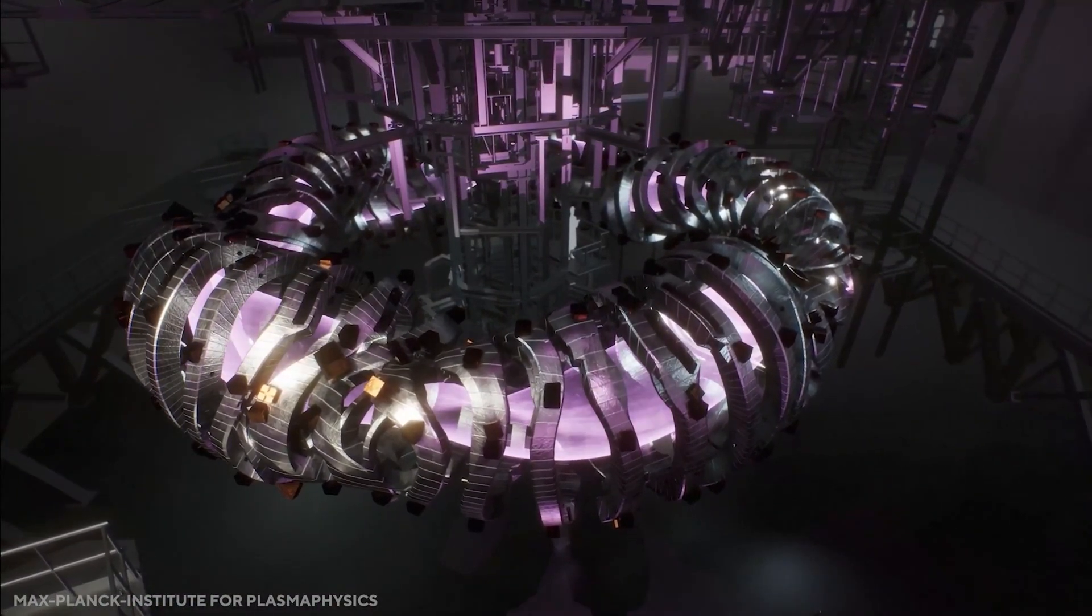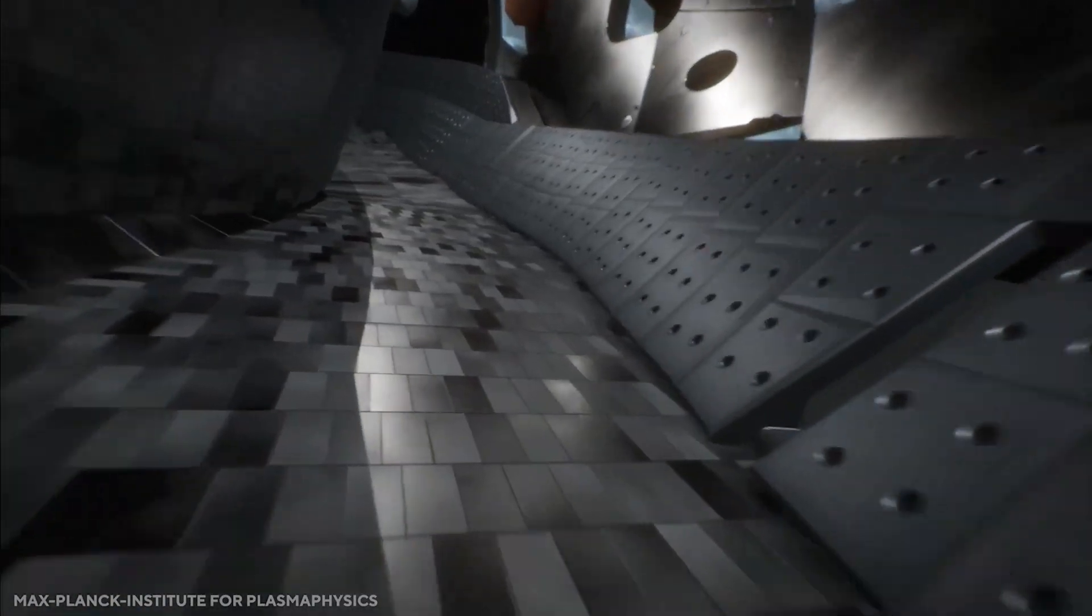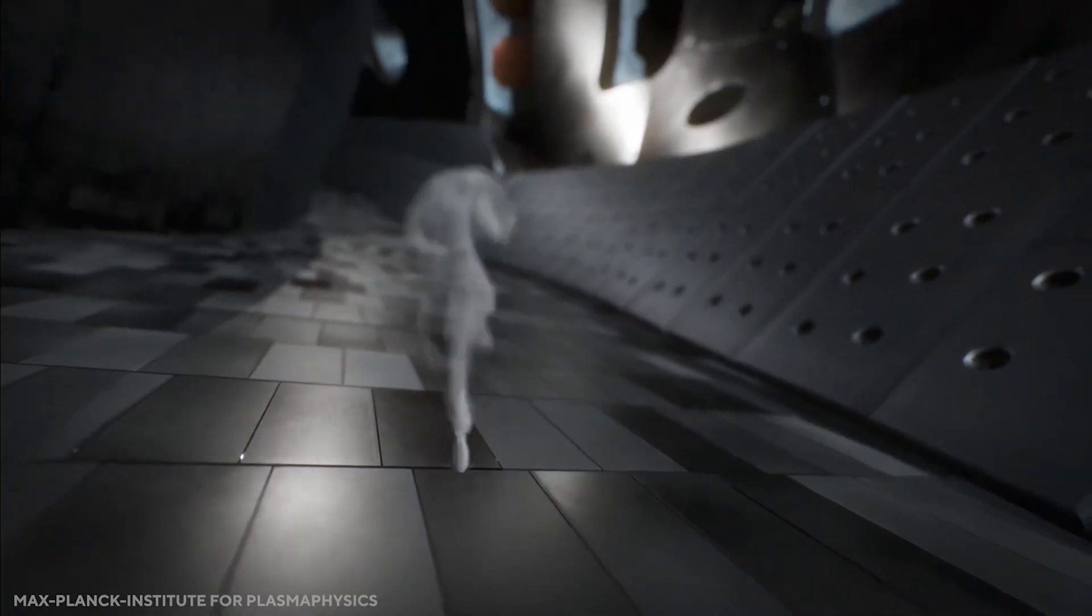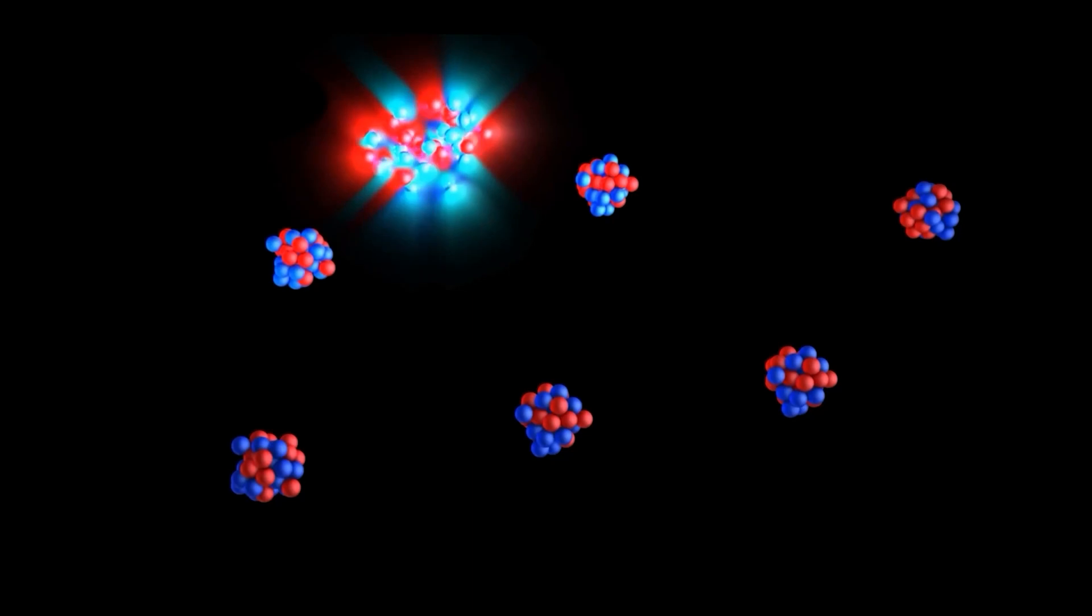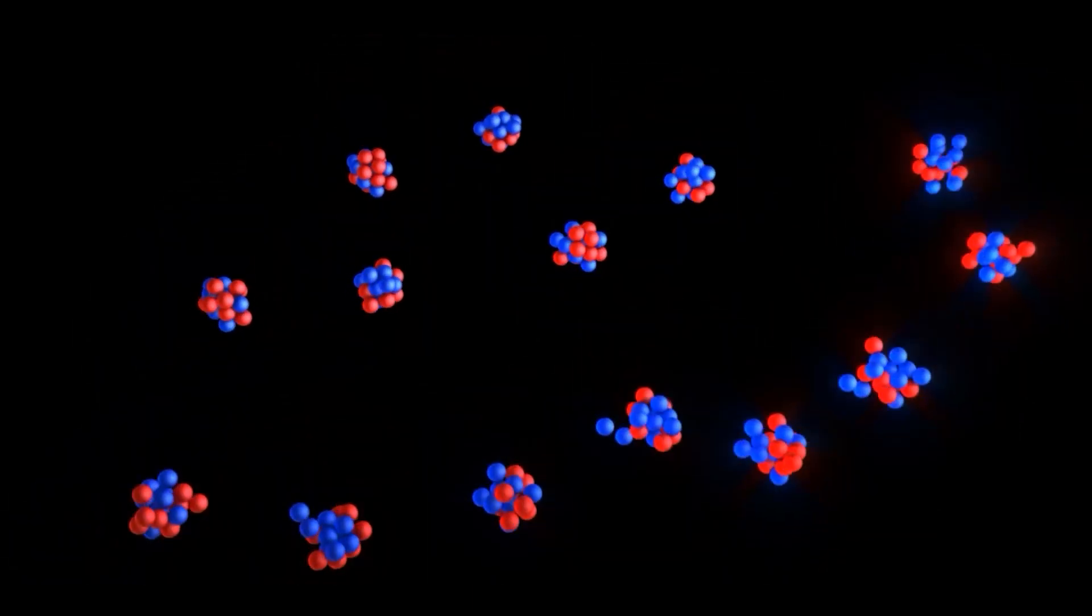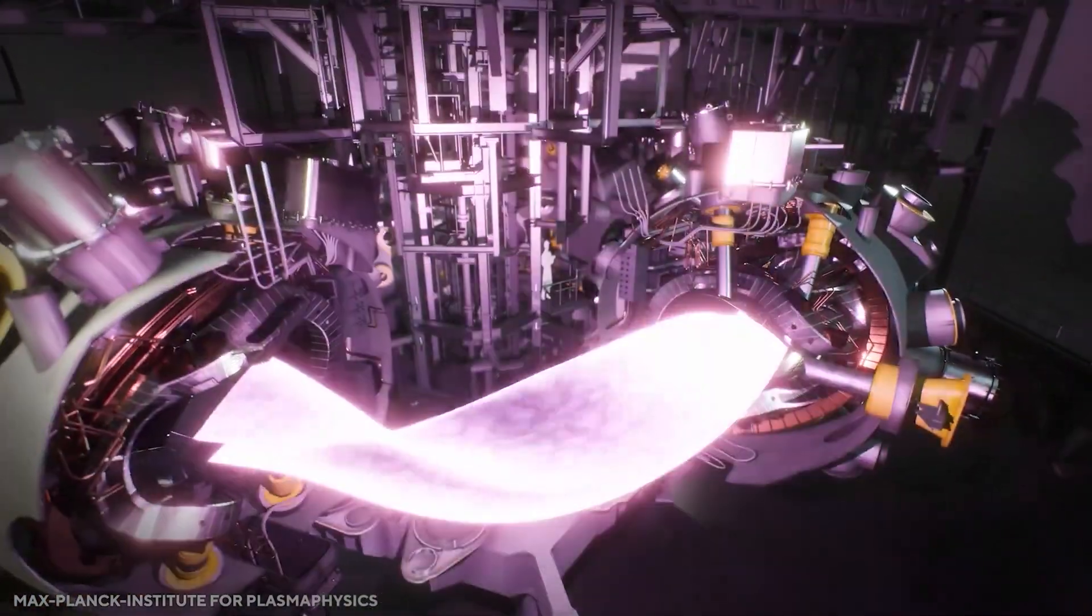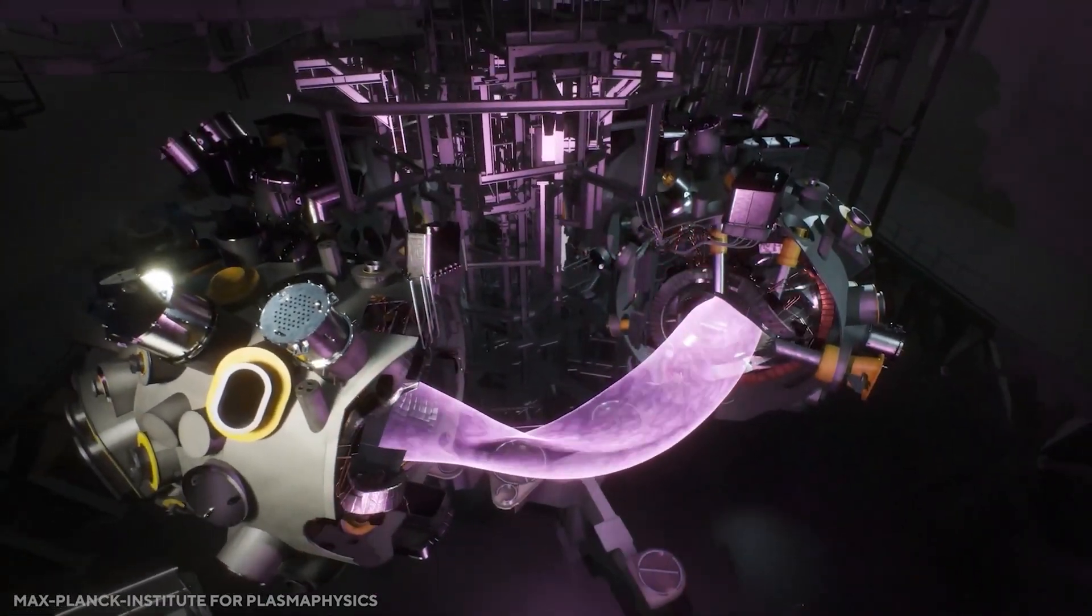However, there is no danger posed by the reactor during operation. The plasma consists of only one milligram of hydrogen, and even a tiny disruption would automatically extinguish the fusion process. A destructive meltdown chain reaction is not possible as it is in the nuclear fission process. It is rather challenging to sustain the fusion process and keep the structure of hot ionized gas, or plasma, alive.